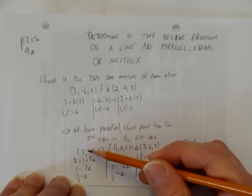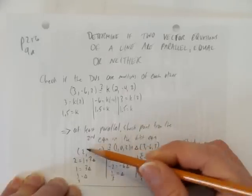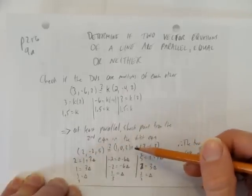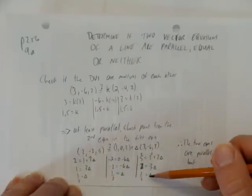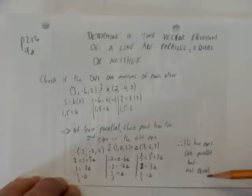Then I had to check, okay, let's take a point from the second equation and check it on the first equation. If I get the same S, then this point is on this equation, which means the lines are equal. But I found the S's were different. This one was different, which means the two equations were parallel, but not equal.